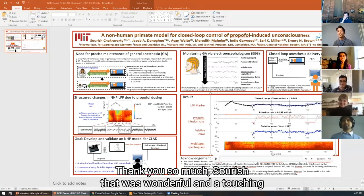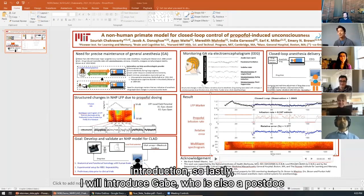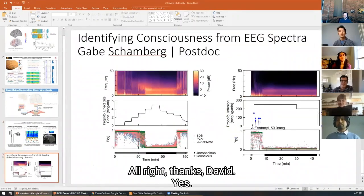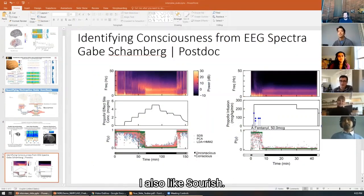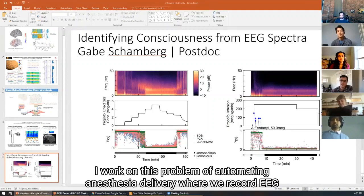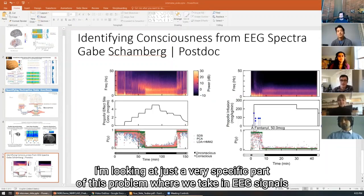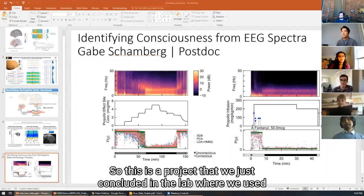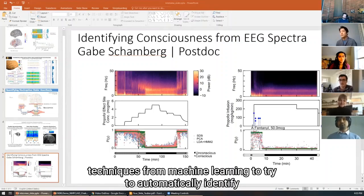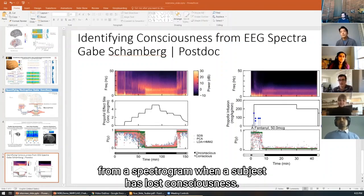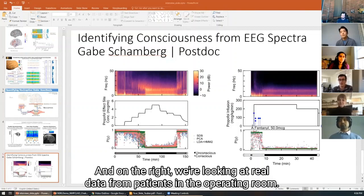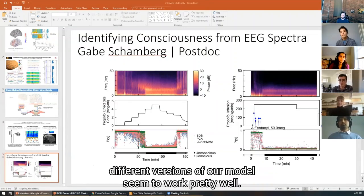Thank you so much, Suresh. That was a wonderful overview and a touching introduction too. Okay, so lastly, I will introduce Gabe, who is also a postdoc. And this is your slide. All right, thanks, David. Yeah, so my name is Gabe. I'm a postdoc. I also, like Suresh, I work on this problem of automating anesthesia delivery where we record EEG signals and from that determine how much drug to give to a patient. And so right here I'm looking at just a very specific part of this problem where we take in EEG signals and from that we want to automatically determine how unconscious somebody is. So this is a project that we just concluded in the lab where we use techniques from machine learning to try to automatically identify from a spectrogram when a subject has lost consciousness. And what's cool is that on the left here we're looking at these healthy volunteers in a very controlled environment. And on the right we're looking at real data from patients in the operating room. And we can see that different versions of our model seem to work pretty well.